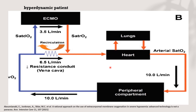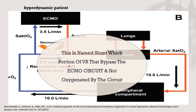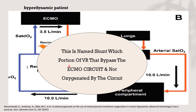If we assume this patient has severe lung dysfunction and a large intrapulmonary shunt, we should expect that he will develop severe hypoxemia. The presence of a shunt means that a portion of venous return bypasses the ECMO circuit and is not oxygenated by the circuit.